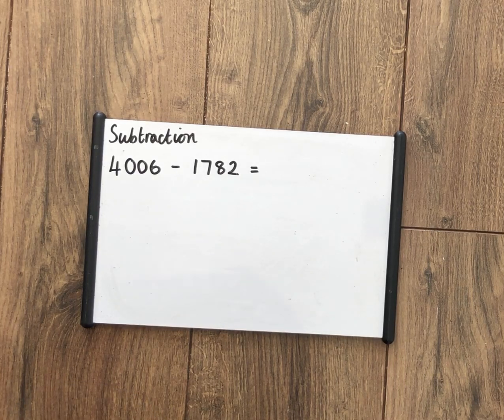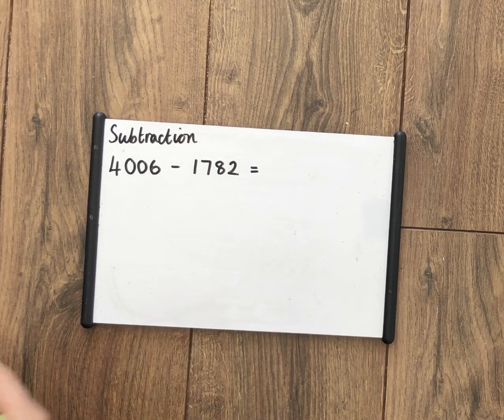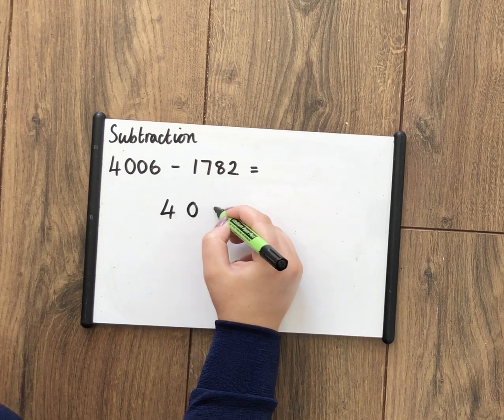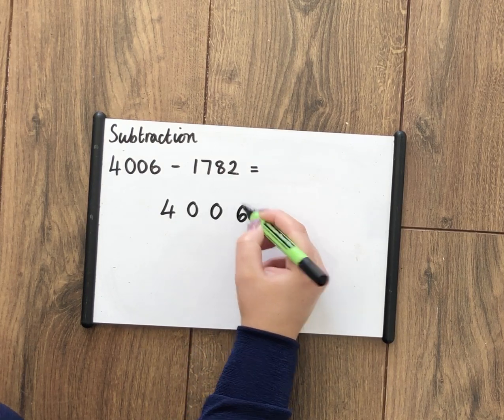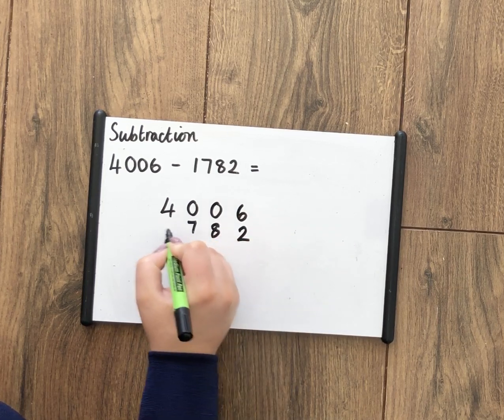Okay, having another look at subtraction. Subtraction follows the same process as addition. First of all, you need to write them out in your column subtraction. Here I can see that I've got the same amount of digits. I'm still going to write this one backwards just to make sure.